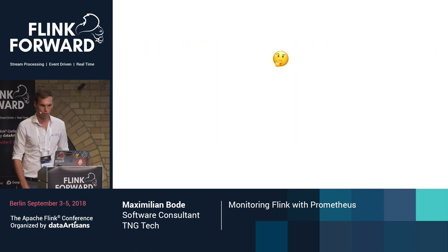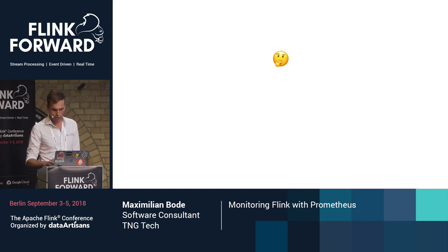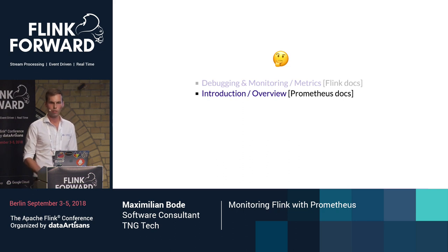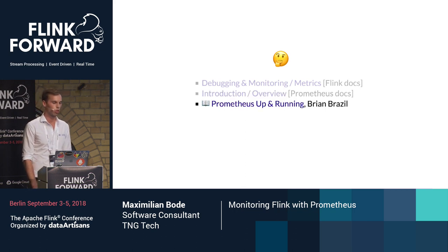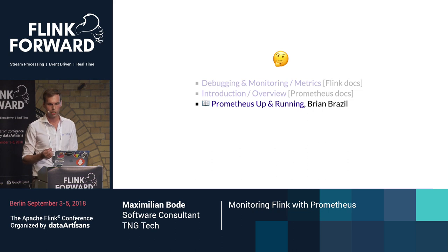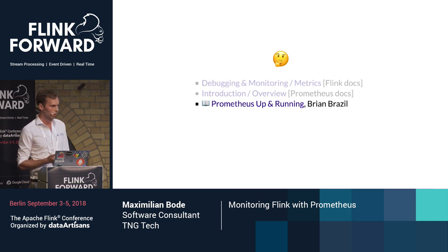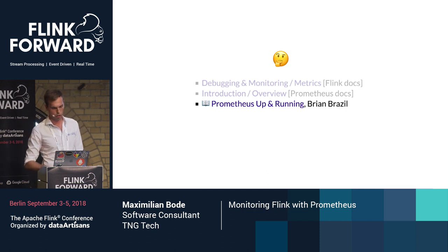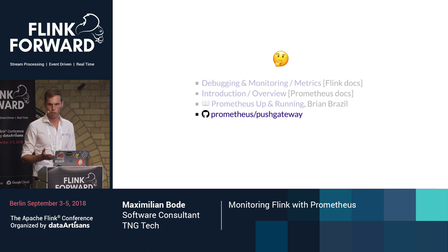If I've succeeded in making you curious about what Prometheus is and whether it's useful to use with Flink, I would recommend checking out the relevant parts of the Flink documentation and reading the Prometheus documentation — it's really extensive and well written. Also, one of the Prometheus contributors, Brian Brezel, has recently published a book called 'Prometheus: Up and Running' which I would recommend. Note that this pull-based model lends itself very well for online systems, web services, and streaming jobs, but it's not so good for things with a more ephemeral nature like batch jobs.